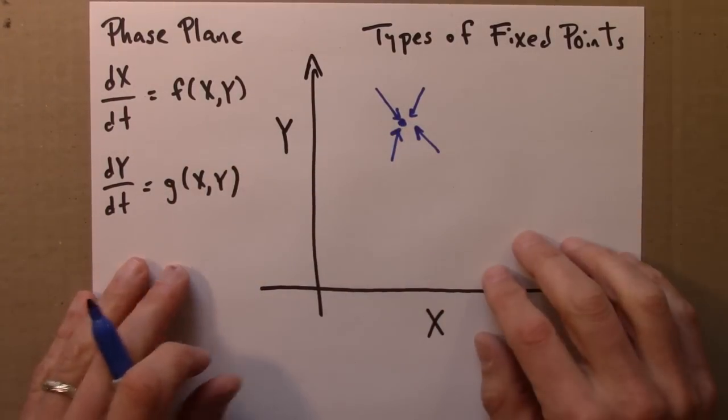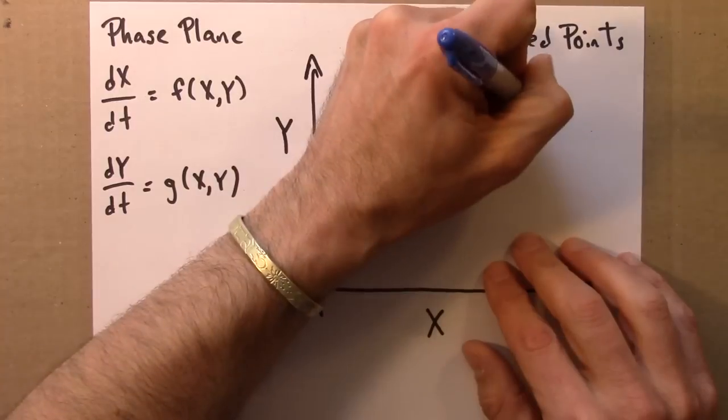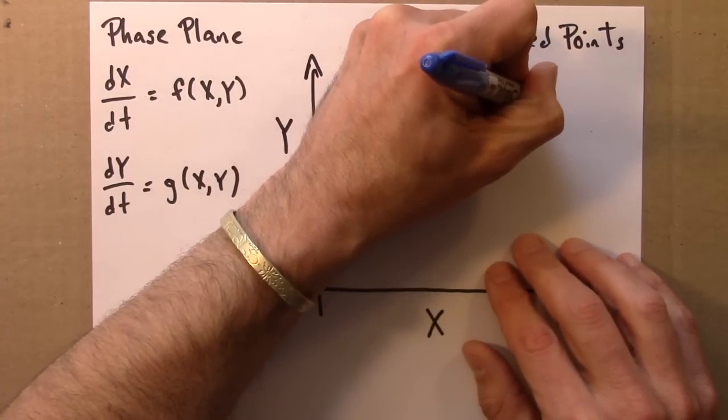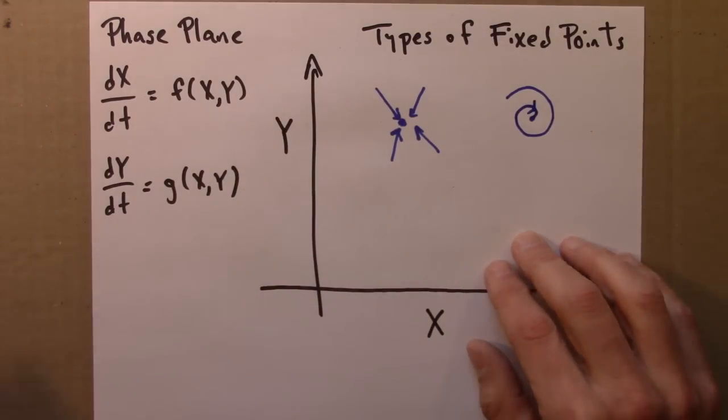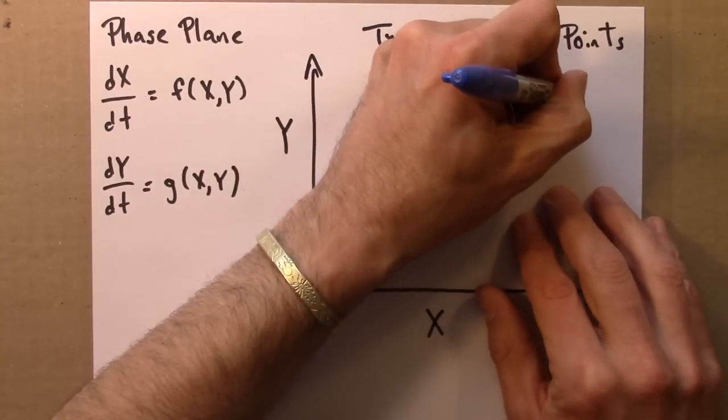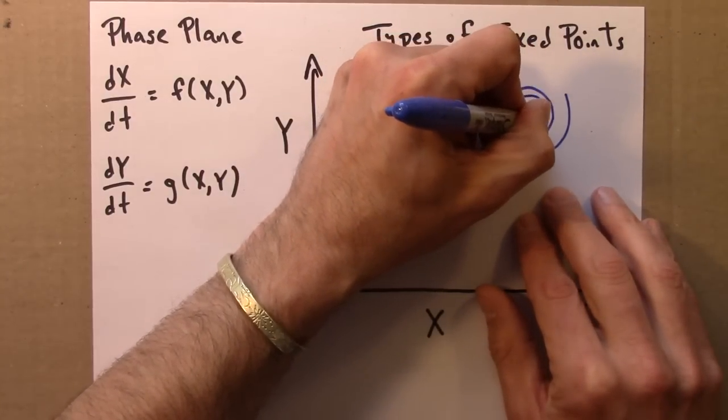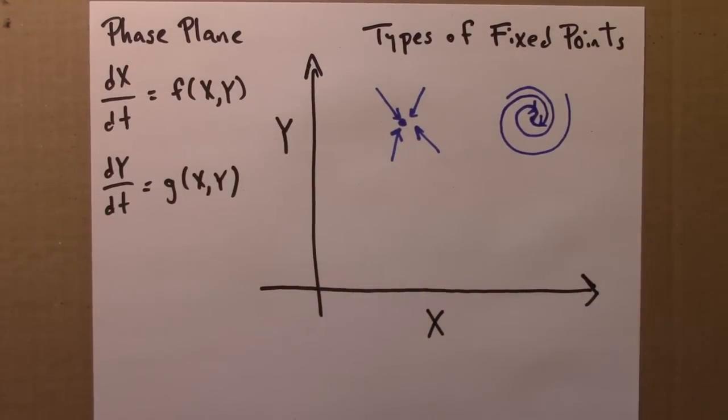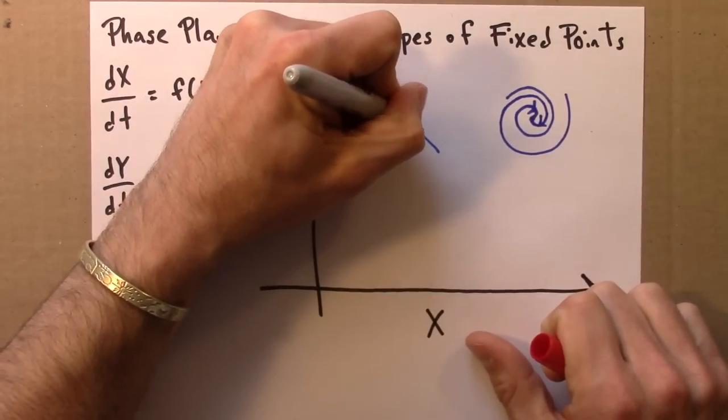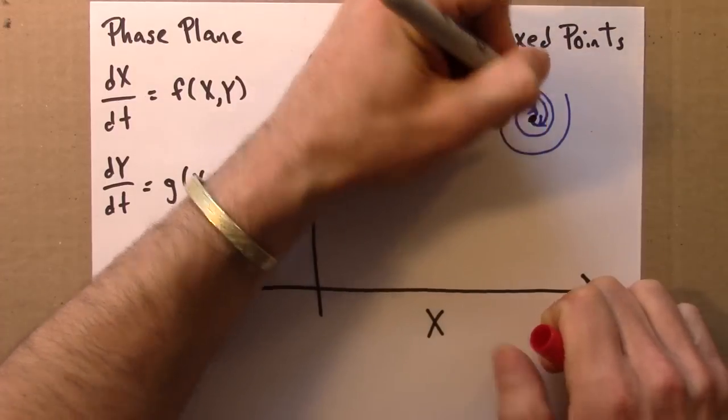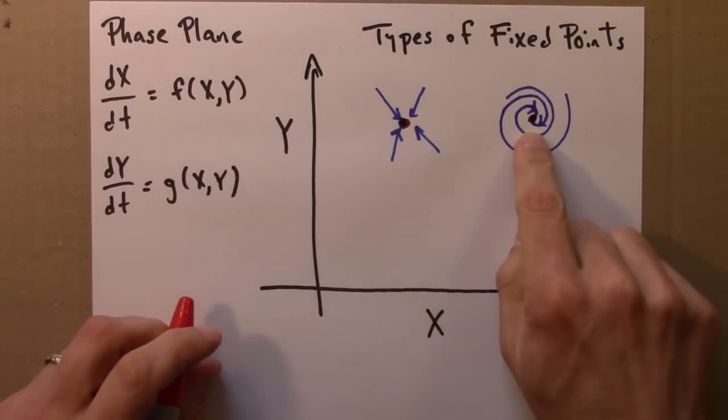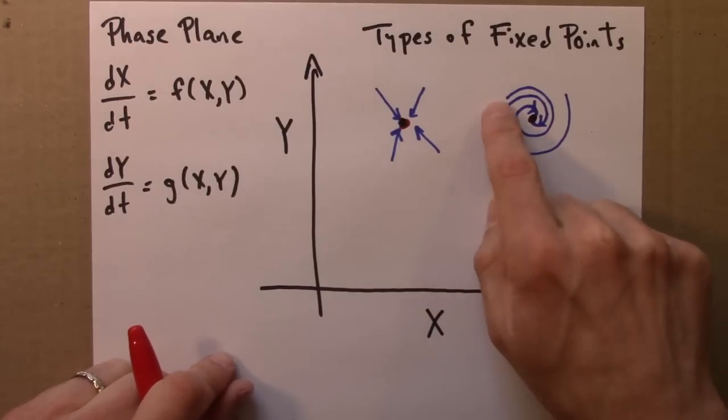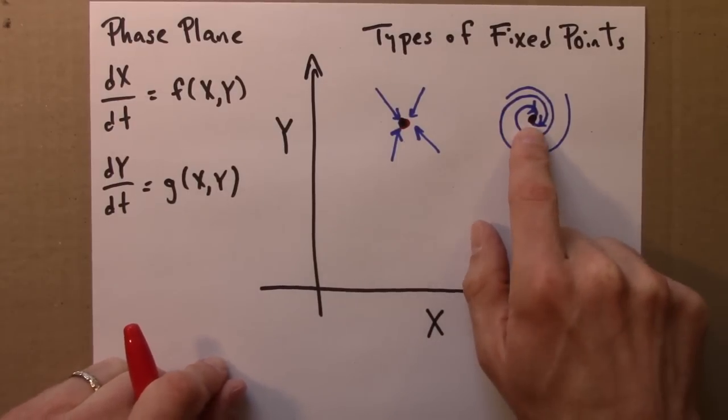So this would be an attracting fixed point. Trajectories are drawn towards it, getting closer and closer to this point. We could also have a situation where trajectories spiral in to a fixed point. Let me draw the fixed points or the equilibrium points in red. So here are these blue lines, they're getting pulled in, it's stable. But there's a twist, one spirals in as one approaches this point.